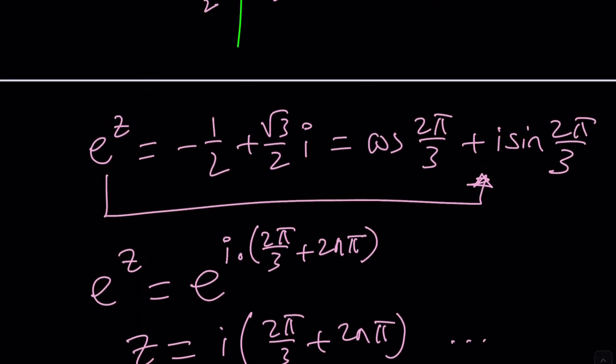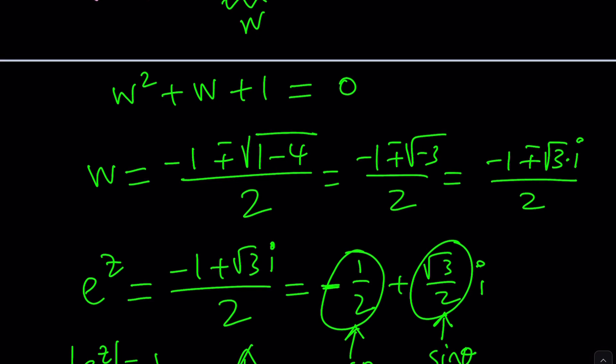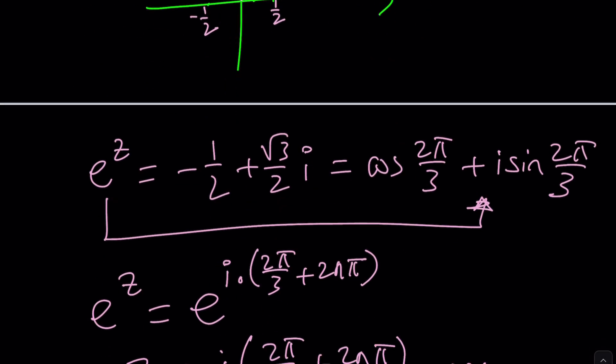The other one, which is e to the power z equals the negative. They're both going to be negative. And guess what that does? That brings you to the third quadrant.